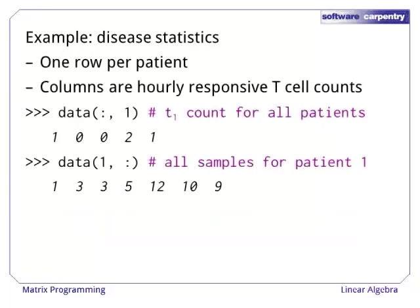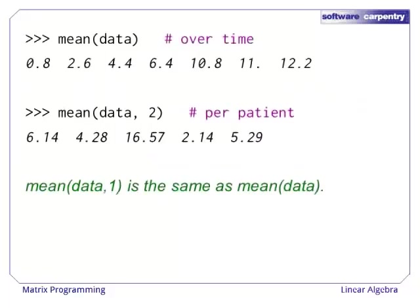Here is a long example of what we can do with array operations. Suppose we have been observing the progress of a disease in some test subjects. Each row of our array corresponds to one patient, and each column is an hourly count of responsive T-cells. This means that the first column of our data is the initial T-cell count for all patients, while the first row is all hourly samples for patient 0. The mean of the data along axis 1 gives us the average across all patients for each hour, giving us the normal progress of the disease.